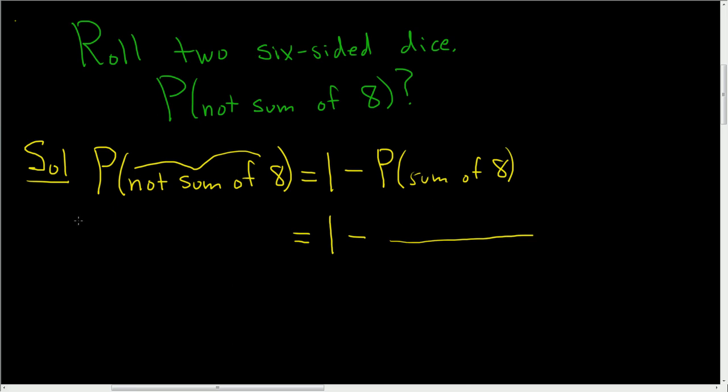So how many ways can you get a sum of eight? Well, you can get a four on the first die and a four on the second die. Or, let's see, a three on the first die, five on the second die, five on the first die, three on the second die. What else? Six. Six and two work. And two and six also work. And I believe that's it. Yeah, there's no seven, so we can't do one and seven.